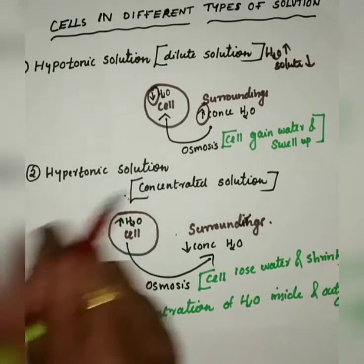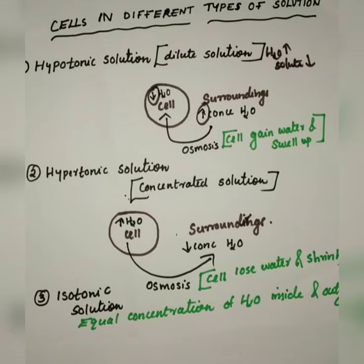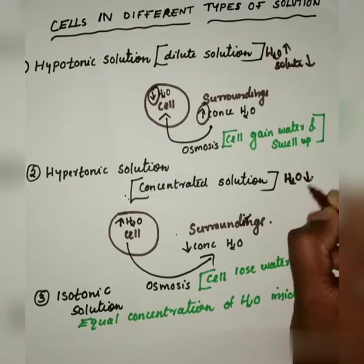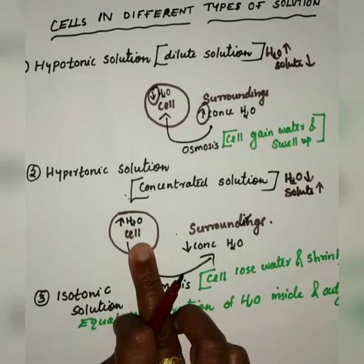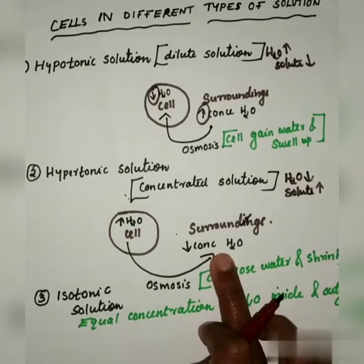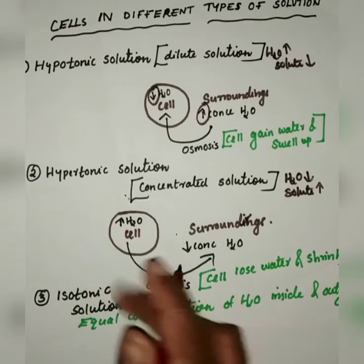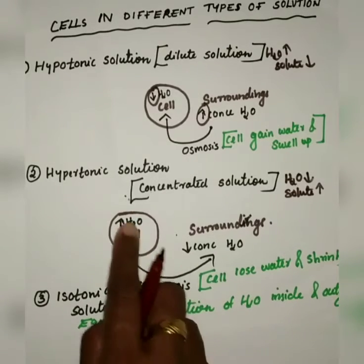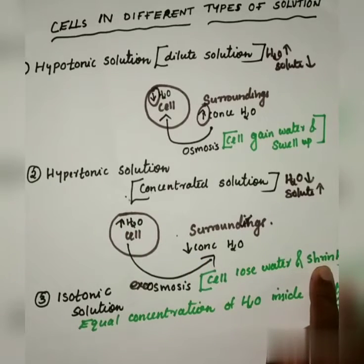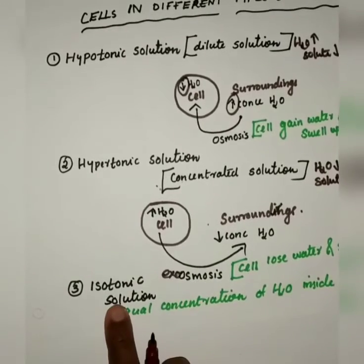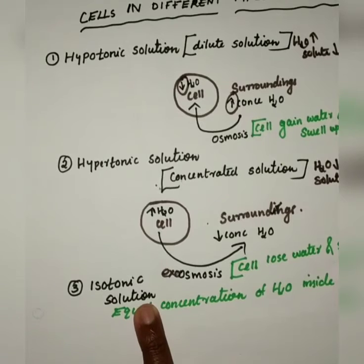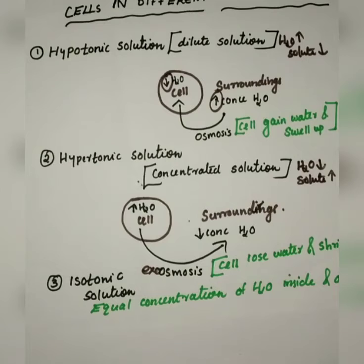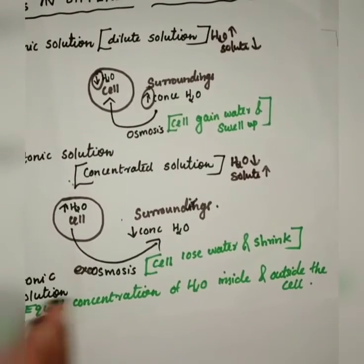Hypertonic solution is a concentrated solution — water concentration is less and solute concentration is more. Inside the cell, water concentration is more; outside in the hypertonic solution it is less. So through exosmosis, water moves out of the cell, and if the cell continuously loses water it will shrink. Isotonic solution contains equal concentrations of solute and water, the same as inside the cell. So there will be no net movement of water — equal water concentration inside and outside means no net movement.